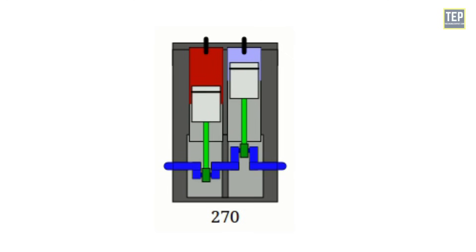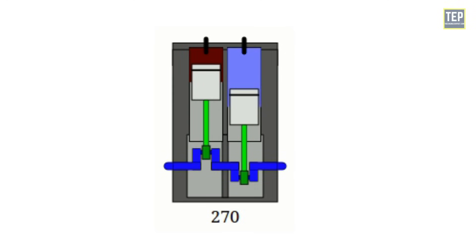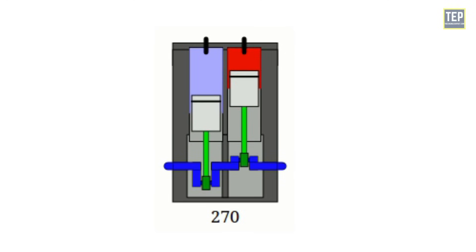Firstly, the most interesting thing about a 270-degree crankshaft twin is that there's never a piston that's not moving.